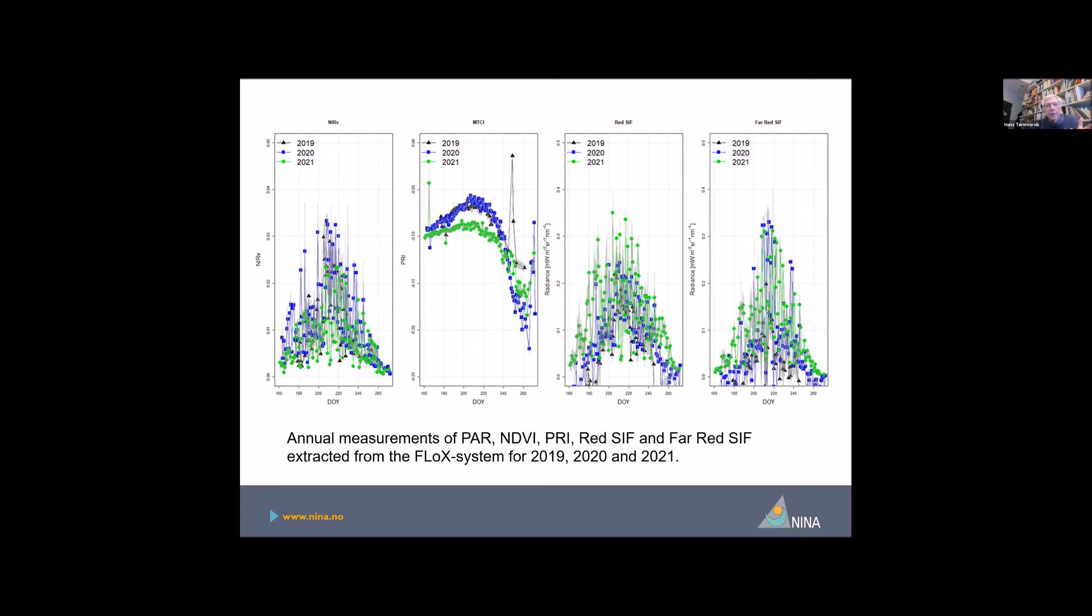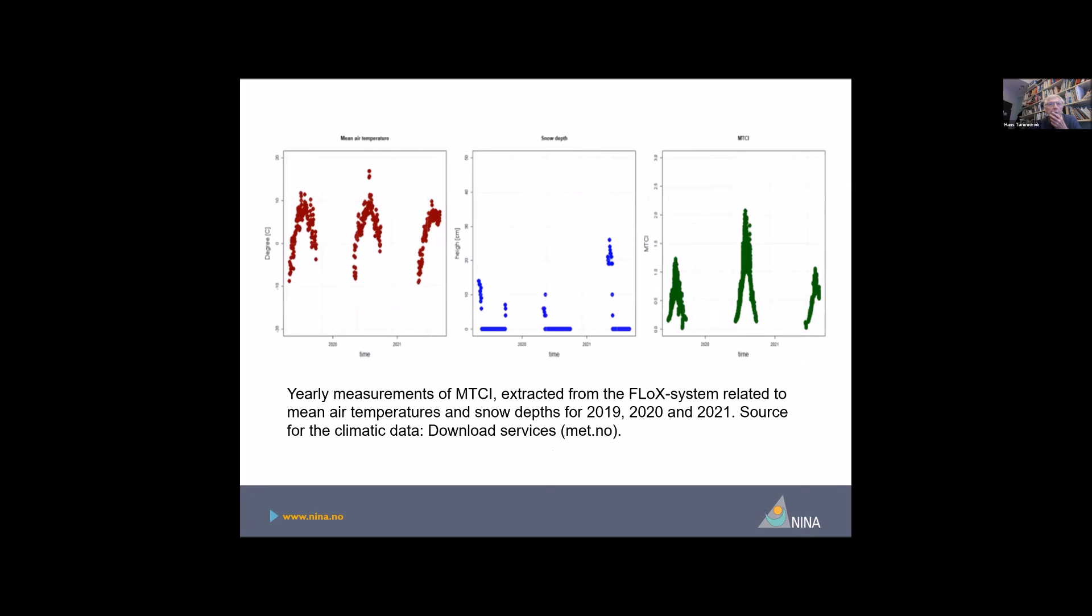And as I said before, 2020 was a very good year. And we also compared the mean air temperature and snow depth from the Adventdalen with the MERIS terrestrial chlorophyll index and you see there is a much better correlation with mean air temperature, but also with number of growing days.